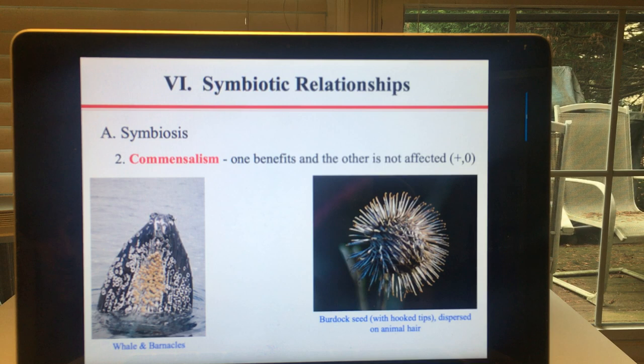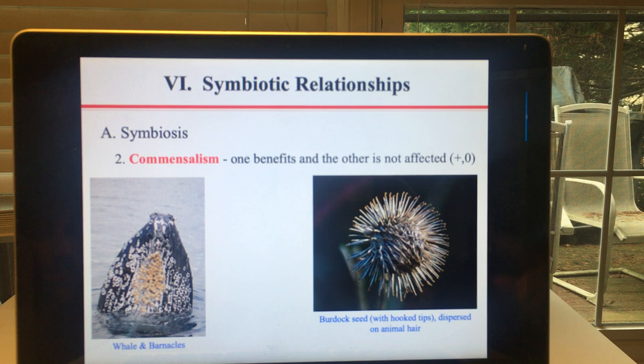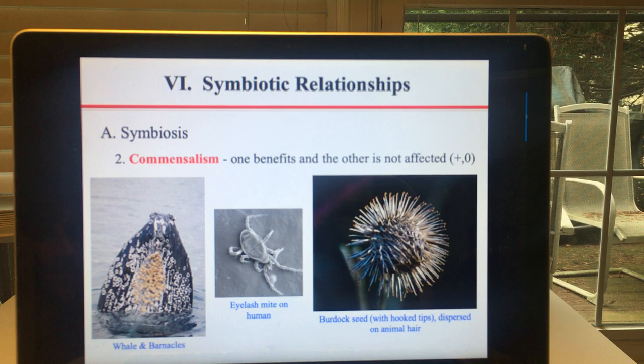Another commensalism example is a burdock seed with hook tips — you may have pulled these out of the fur of your dog, especially if they have long fur. They get caught in the dog's fur and then get dispersed far away from the parent plant so the parent and offspring don't compete for resources. It doesn't harm the dog at all. And eyelash mites — yes, you might actually have these in your eyelashes.